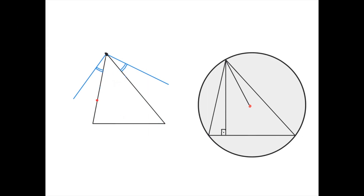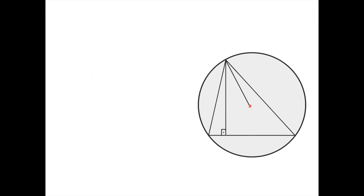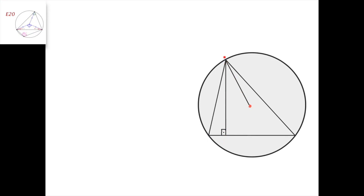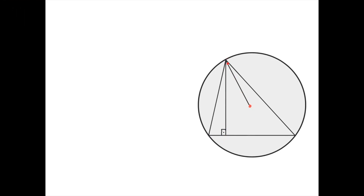Furthermore, if we have a triangle and we have two lines that pass through one of the vertices of the triangle such that this angle equals this angle, then we call these two lines isogonal conjugate lines in the triangle with respect to this vertex. In this video we're going to show that the altitude and the segment connecting this vertex to the circumcenter are isogonal conjugate lines in the triangle with respect to this vertex. In other words, we're going to prove that this angle equals this angle.